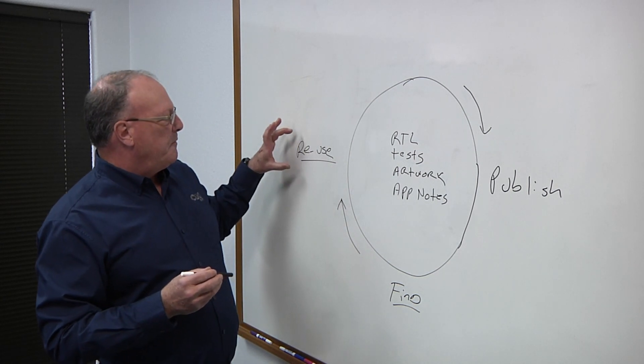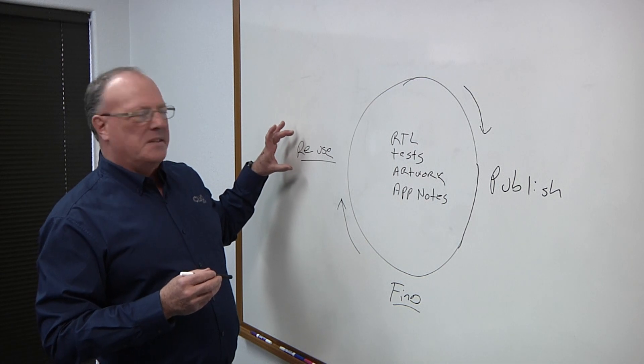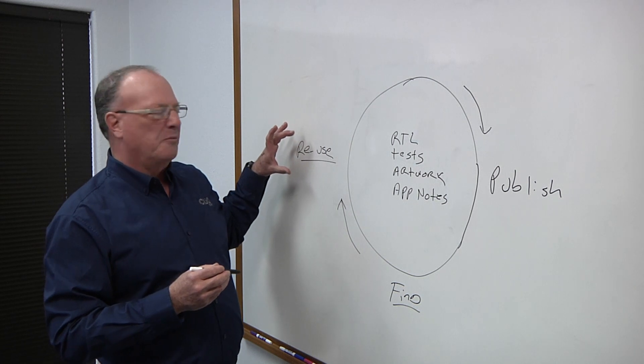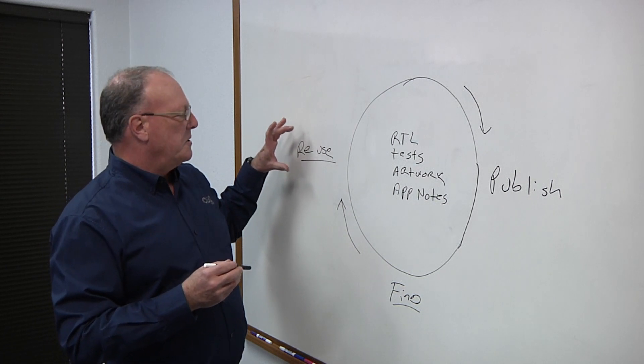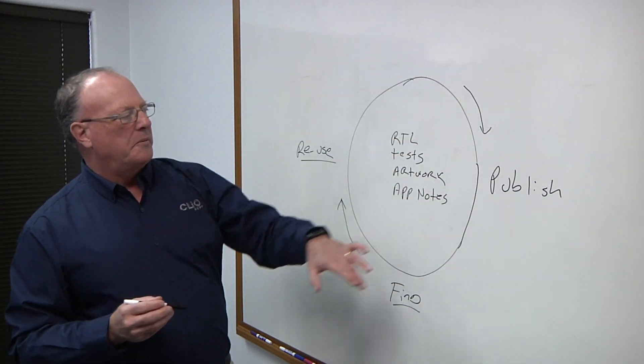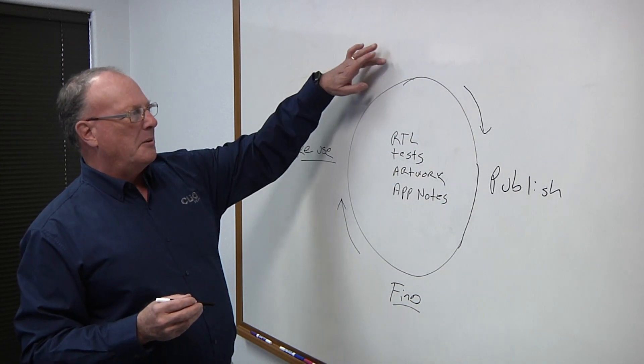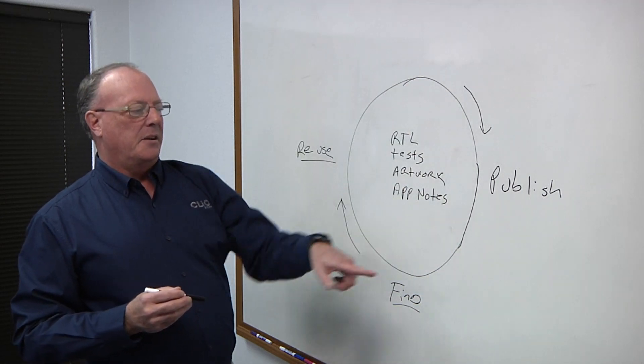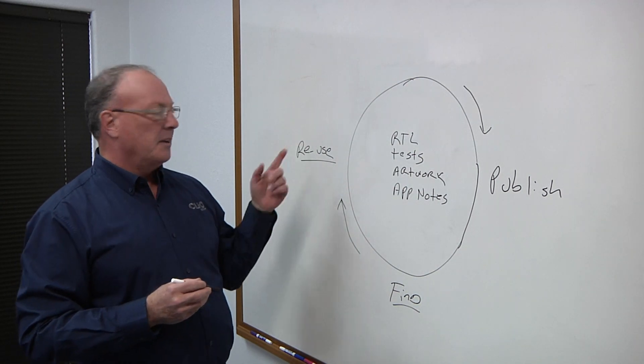And then, we often find that, particularly within companies, they'll clone the IP or they need to make some changes to it in order to make it conform to a new process node. So they'll take the assets, tweak it to their use, and then go back through this whole process again of publishing it as a new version or maybe even a whole other IP that's been cloned. And it goes through the cycle of publishing, finding, and reuse again.